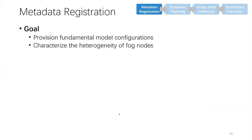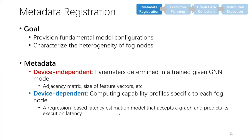For the first step, FogGraph performs metadata registration. The goal is to provision fundamental model configurations and characterize the heterogeneity of fog nodes. We identify two types of metadata. The first is device-independent data, including parameters determined in a trained GNN model like the adjacency matrix and the size of feature vectors. The second is device-dependent data, which characterizes the computing capability of each fog node. We acquire this by profiling the execution latency of graphs of variable sizes and building regression models for prediction. With these regression models, we can directly estimate the inference latency on any fog node with any size of graph.